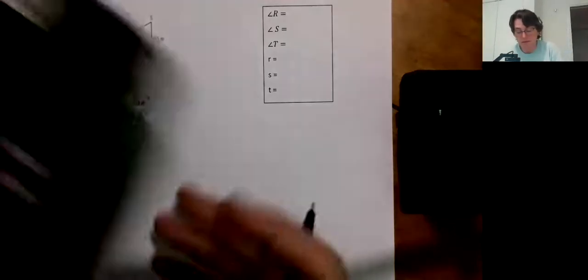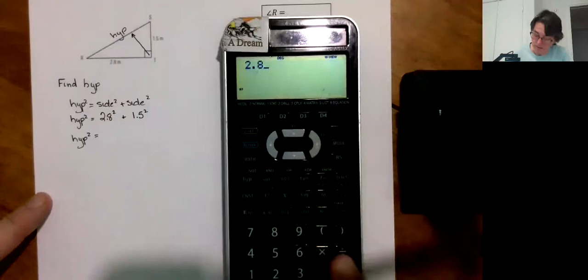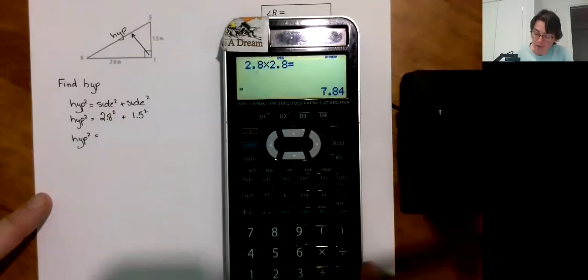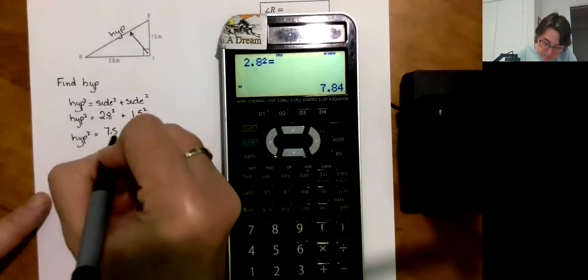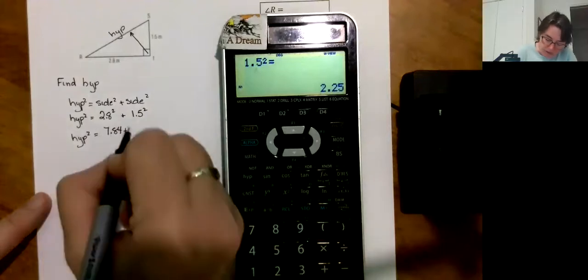Hypotenuse squared is equal to... 2.8, now I can go times 2.8, 7.84. Or I can go 2.8 and I can use my squared button. I don't know if you guys can see that. Either one is going to give me 7.84. 1.5 squared, 2.25.